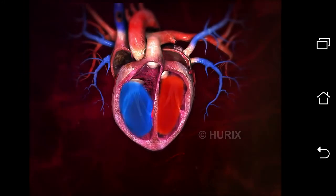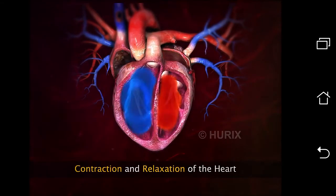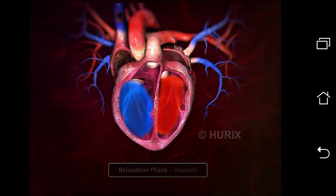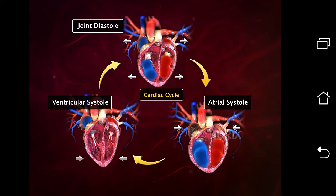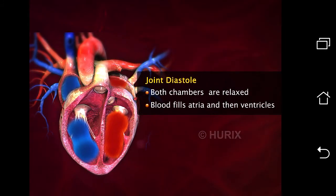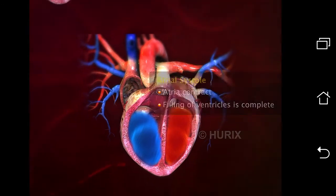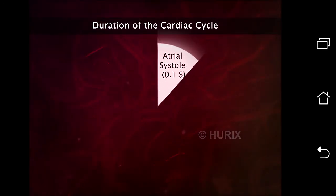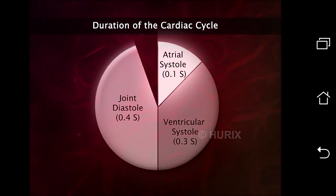The pumping action of the heart is because of the alternate contraction and relaxation of the atria and ventricles. The contraction phase of the heart is called the systole and the relaxation phase is called the diastole. This rhythmic contraction and relaxation of the chambers during one heartbeat constitutes the cardiac cycle. The heart beats about 72 times per minute, so the duration of each cardiac cycle is approximately 0.8 seconds.